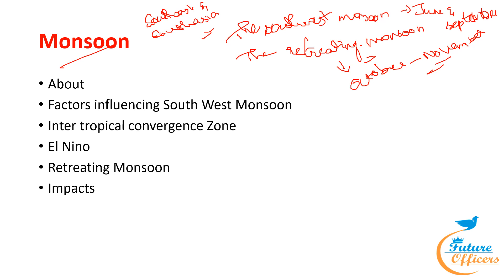The summertime shift in the Intertropical Convergence Zone (ITCZ) position over the Ganga Plain — an equatorial trough typically located approximately 5 degrees north of the equator — is also referred to as the monsoon trough during the monsoon season. The ITCZ is a broad trough of low pressure in equatorial latitudes where trade winds from the northeast and southeast converge. This convergence zone follows the apparent movement of the sun, moving north or south but remaining roughly parallel to the equator. The high pressure area over the Indian Ocean, roughly located at 20 degrees south and present east of Madagascar, influences the strength and location of the Indian monsoon.